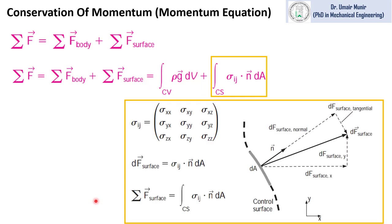The next is the surface force. There are two types of forces acting on a surface: one is the normal force and the second one is the tangential force. The normal force is perpendicular to the delta-a surface, and the tangential force is parallel to the delta-a surface. The normal force produces a normal stress, which can be pressure, and the tangential force produces the shear stress on a surface.